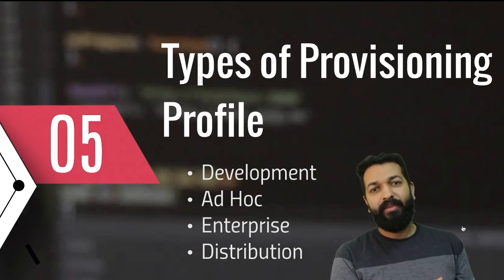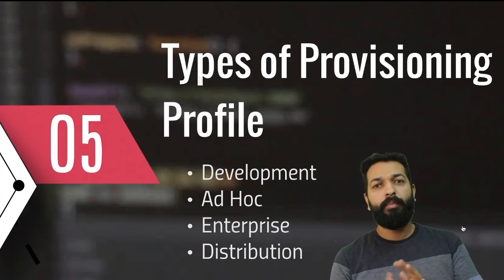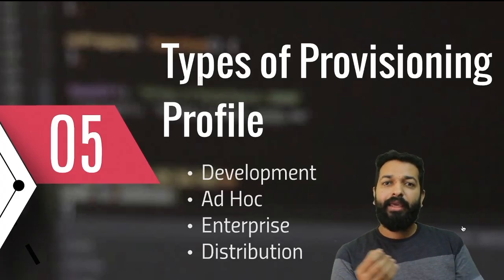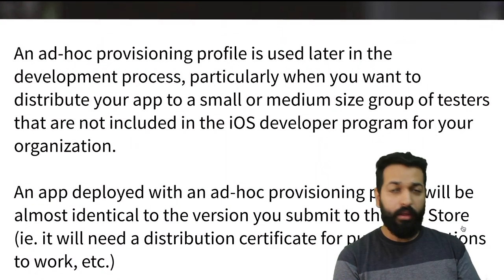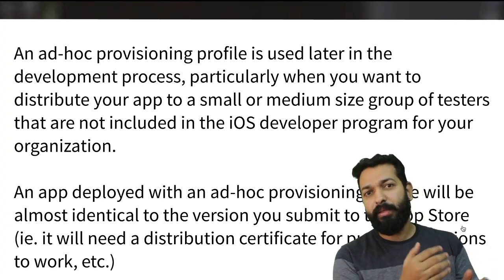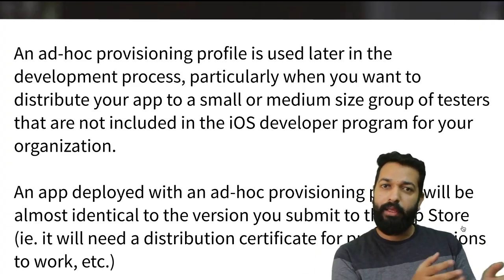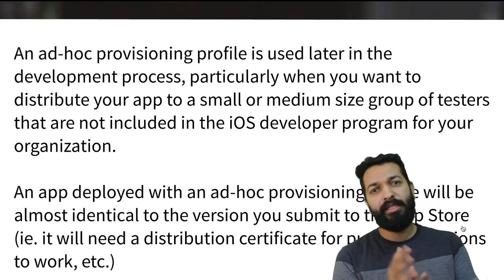The other two types — ad hoc and enterprise — are used in the development process but at a later stage. An ad hoc profile is used to distribute our app to a larger audience: people who are not part of the Apple developer beta program or whose devices are not mentioned in our developer certificates can test our app using the ad hoc profile. An app deployed using an ad hoc provisioning profile is very similar to the version submitted to the App Store, as the App Store push notification certificate is used with ad hoc provisioning profiles, giving almost the same experience as the App Store build.